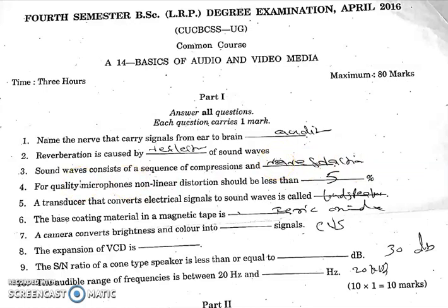The fourth question: for a quality microphone, the non-linear distortion should be less than 5%. Fifth one: a transducer that converts electrical signal into sound waves is called a loudspeaker.